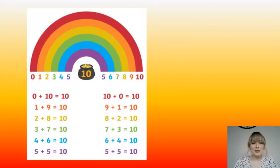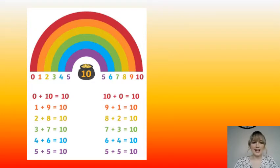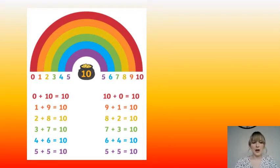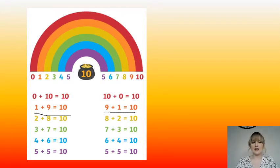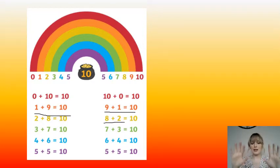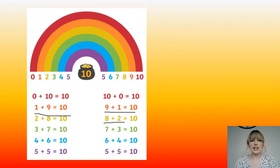So here we have the number bond rainbow and we see this in our classrooms at school so we should all be familiar with it. We know that 0 and 10 is 10, 1 and 9, 2 and 8, 3 and 7, 4 and 6, and 5 and 5 is 10. And on the other side of the rainbow we've got the opposite — so if we know that 1 and 9 is 10 we can switch that around and we also know that 9 and 1 is 10, and if we know that 2 and 8 is 10 we also know that 8 and 2 is 10, because we just switched the numbers around.